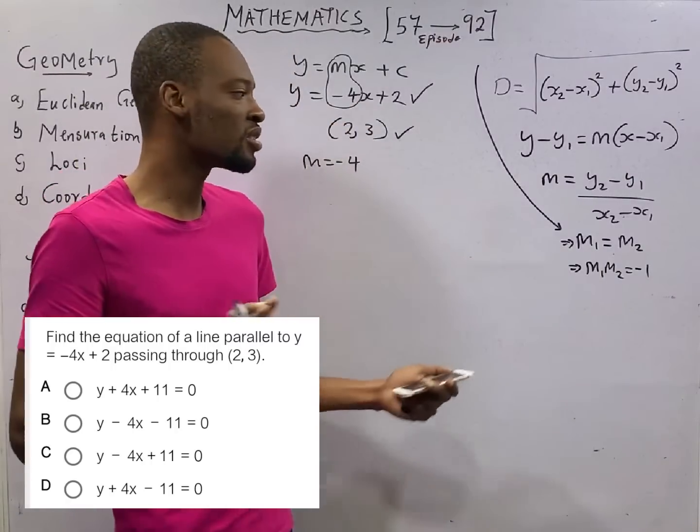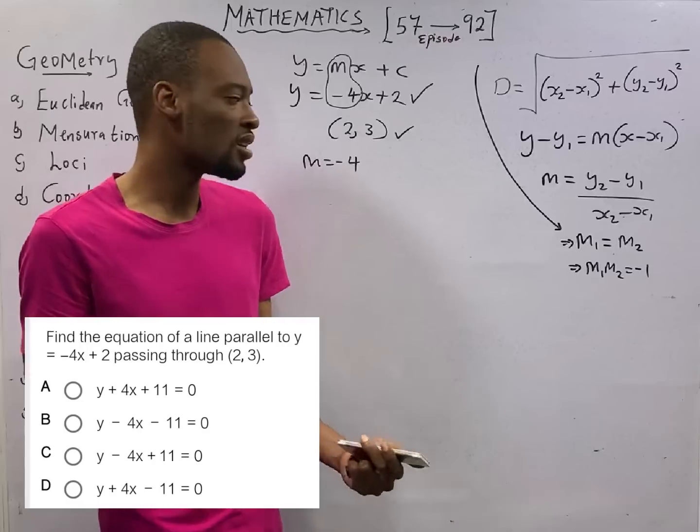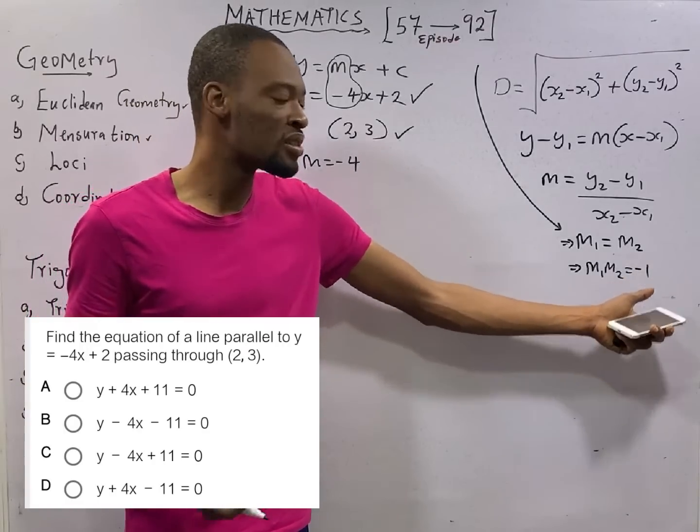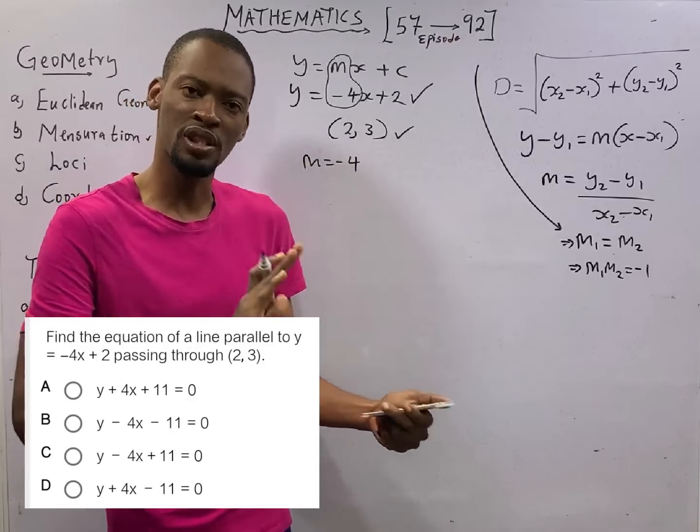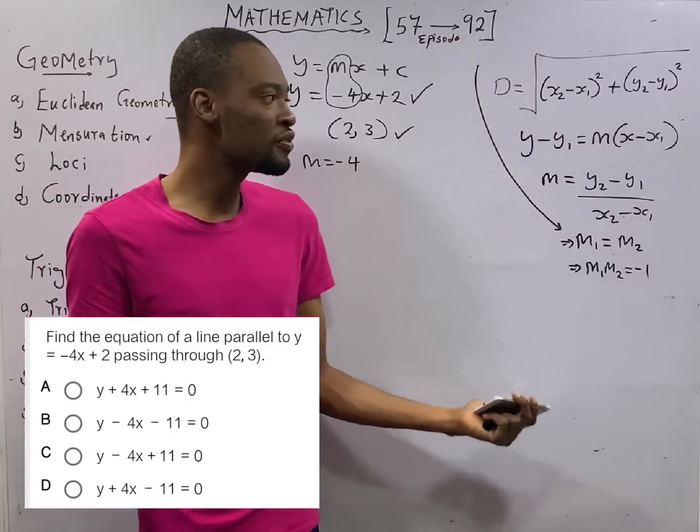But when they are perpendicular, the product of their gradient will be minus 1. Which means the second gradient will be minus 1 divided by the first gradient.